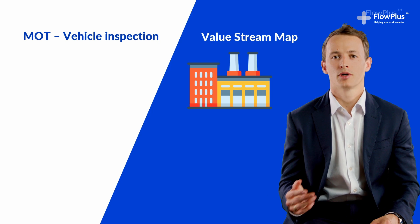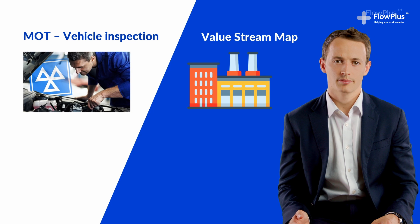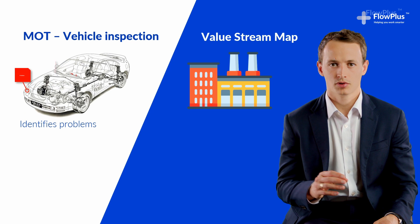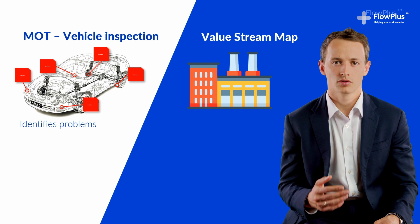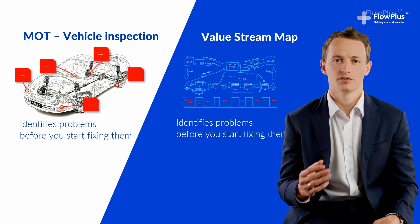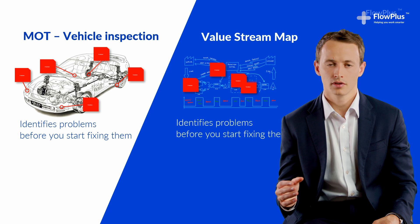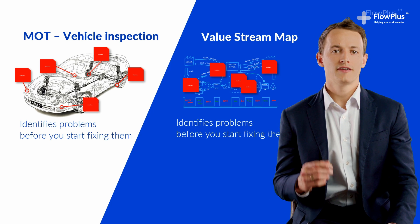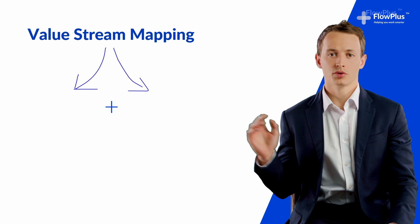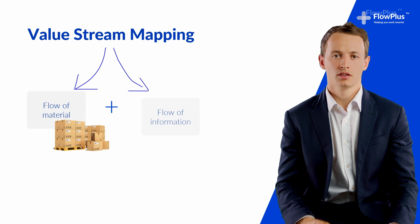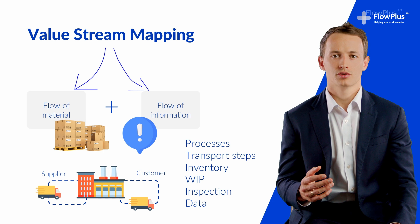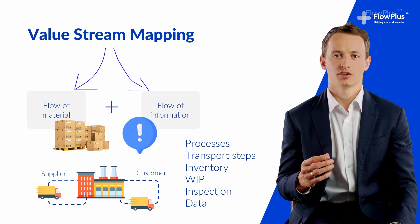In the UK, we have something called an MOT for your car, which is a vehicle inspection to make sure it is road worthy and you need to get the inspection done every year. It identifies problems like too high emission levels, or poorly functioning brakes, or lights not working. And in some way, it has a similar role to a value stream map — to identify problems before you start fixing them. A value stream map maps both the flow of material and the flow of information through your system, from your supplier all the way through to your customer, and includes all the processes in scope, transport between processes, inventory, and data on the efficiency of each process.